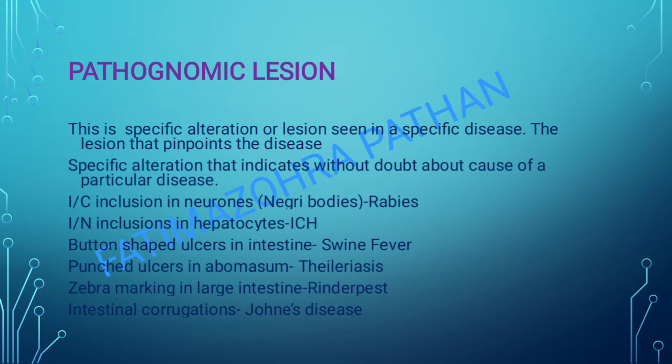Negri bodies in neurons — rabies mein dekhne ko milti hai, woh microscopic picture mein dekh sakte hai. Phir intranuclear inclusions in hepatocytes in infectious canine hepatitis. Button-shaped ulcer — yeh bahut clearly dekhne ko milta hai aur normally poocha jaata hai.